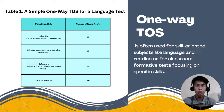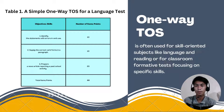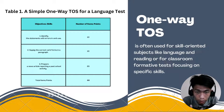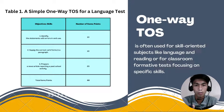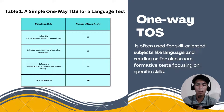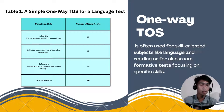As you can see, we have a table here. Let's take this table as one example of TOS for a language test. In this table, we have two columns. The first column is objectives and skills, like: identify the statement with errors in verb use; supply the correct verb forms in the paragraph; and prepare a news article reporting a past school activity. The second column is for the number of items and points. The teacher will decide how many items or points to be given in the test, considering the nature and grade level or thinking skills desired. In this example, we have 40 points.